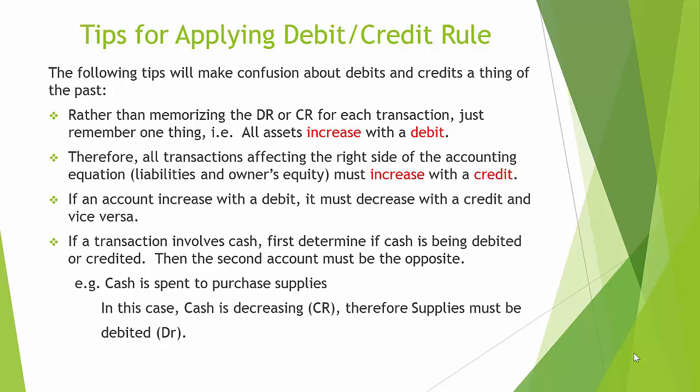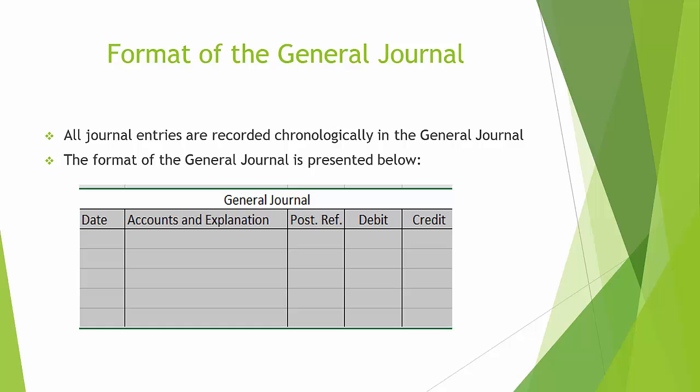Example: cash is spent to purchase supplies. In this case, cash is decreasing, therefore it's credited. Therefore, supplies must be debited.